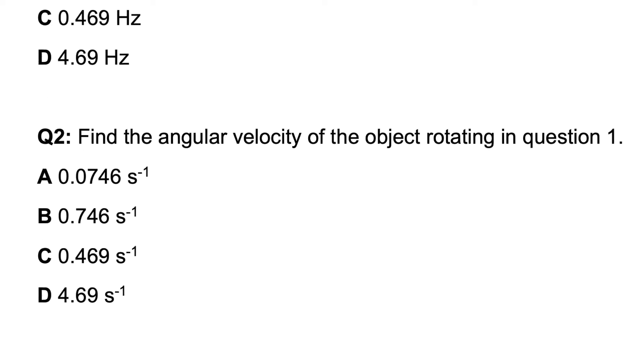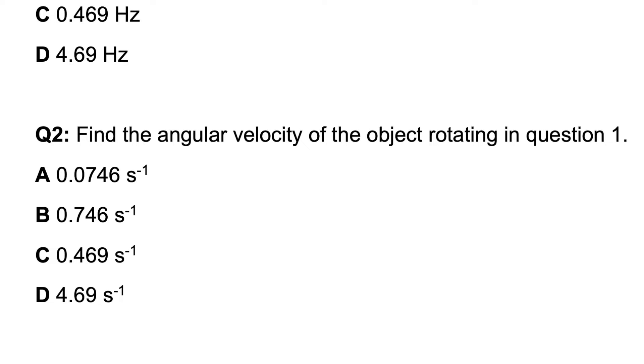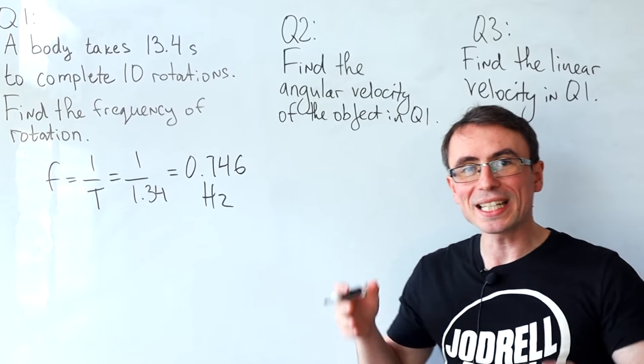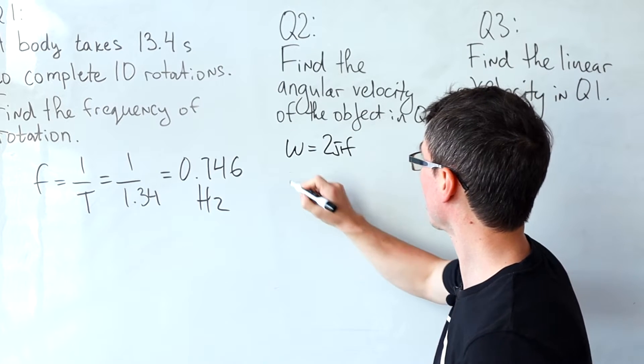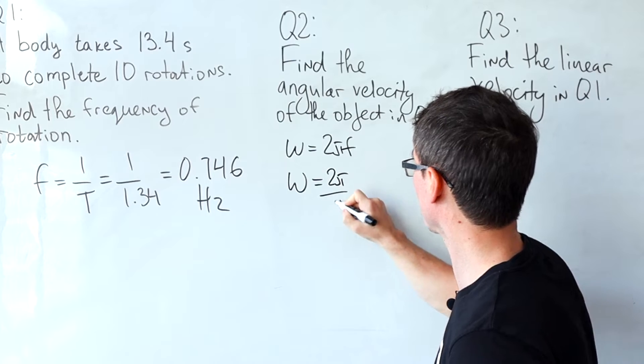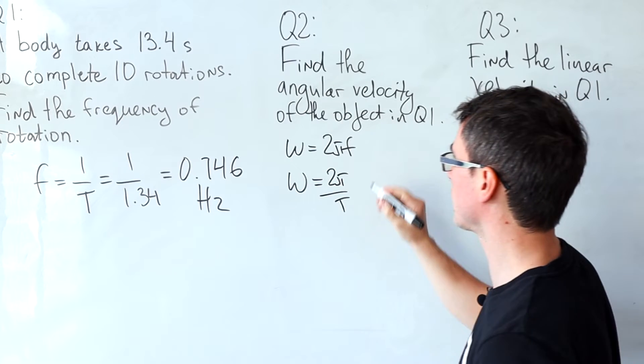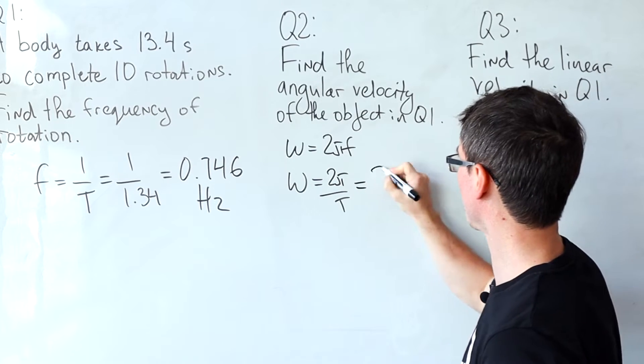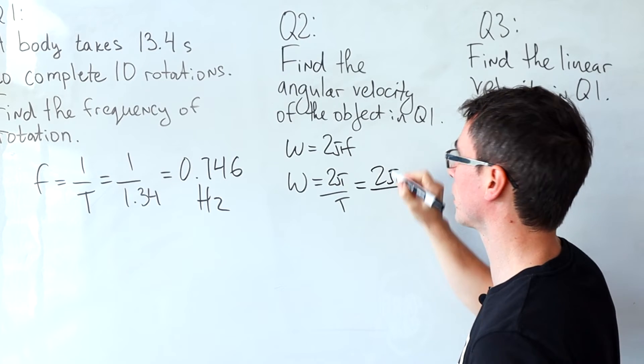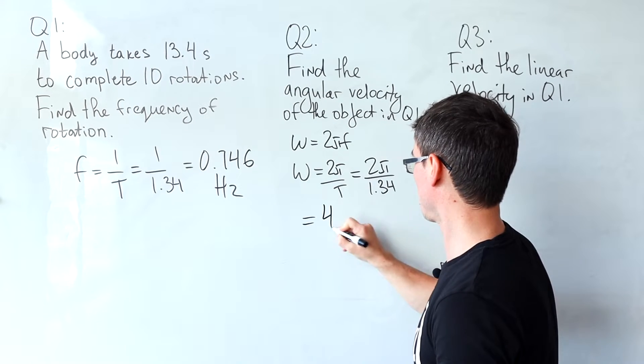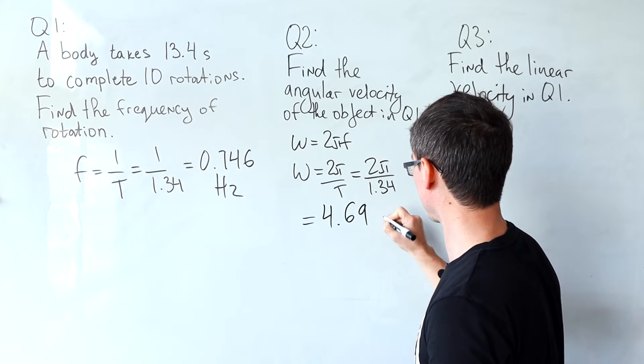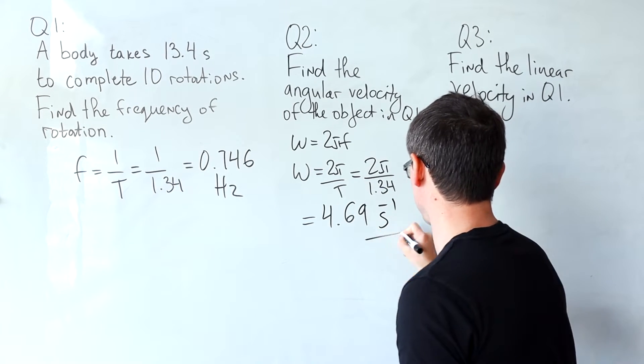Question two: find the angular velocity of the object. To solve this one we could either use omega equals 2πf or omega equals 2π divided by the time period. The two approaches are completely equivalent so let's just use this one, 2π divided by 1.34, and this gives me around 4.69 seconds to the power of minus one.